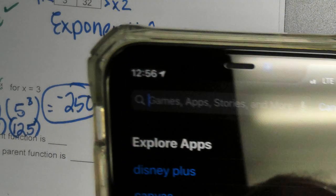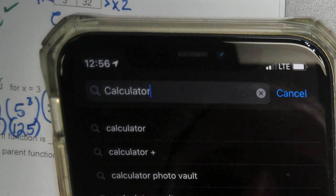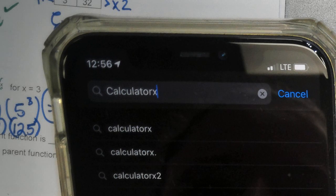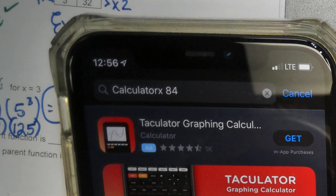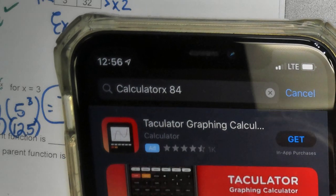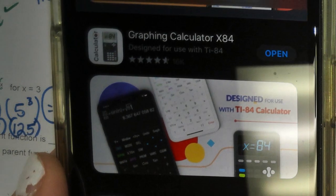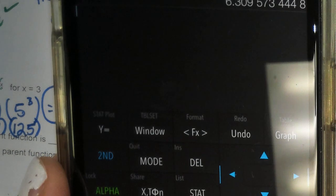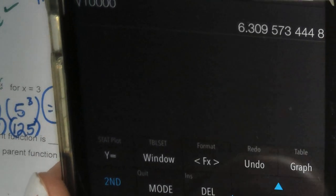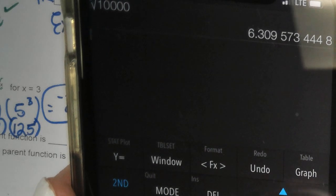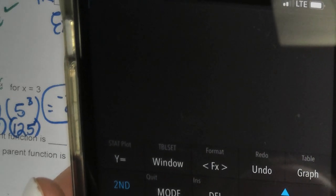If you go to your app store, or whatever you use, if you put in calculator x84, don't get the one on the top, not the calculator, it's this one. This one is the one you want, and you're going to press get or open, and then download that. This is very, very similar to the calculators we use in class, and in fact, it's actually a series higher, so it might even have more function to it.